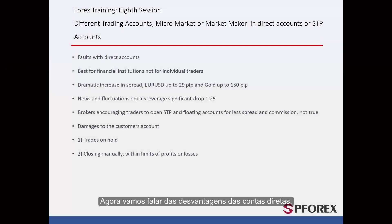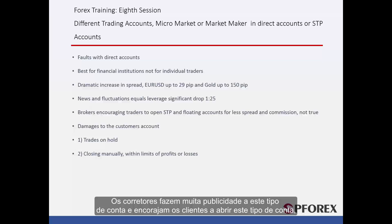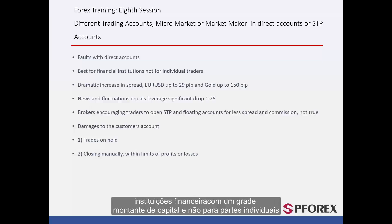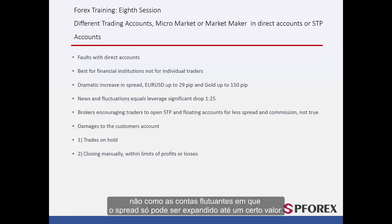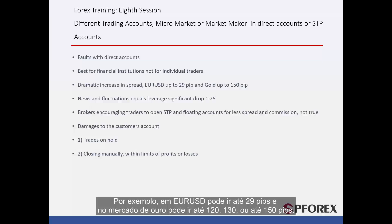Now let's talk about the disadvantages of direct accounts. Brokers usually advertise heavily on these account types and encourage customers to open floating and especially ECN accounts. However, you should know that these accounts are usually a good choice for financial institutions with a huge amount of capital, not for individual parties. This is because these accounts usually include a dramatic increase in spread — unlike floating accounts where spread can only widen to a certain value. For instance, in Euro against US Dollar it can go up to 29 pips, and in the Gold market it can go up to 120, 130 or even 150 pips.